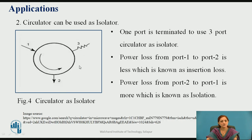The second application is that the circulator can be used as an isolator, which passes the signal in one direction only. One port is terminated on the 3-port circulator to use it as an isolator. Power loss from port 1 to port 2 is less, known as insertion loss, while power loss from port 2 to port 1 is more, known as isolation.